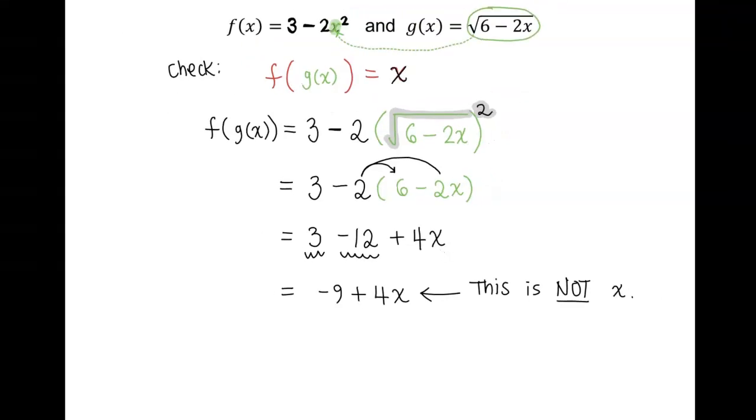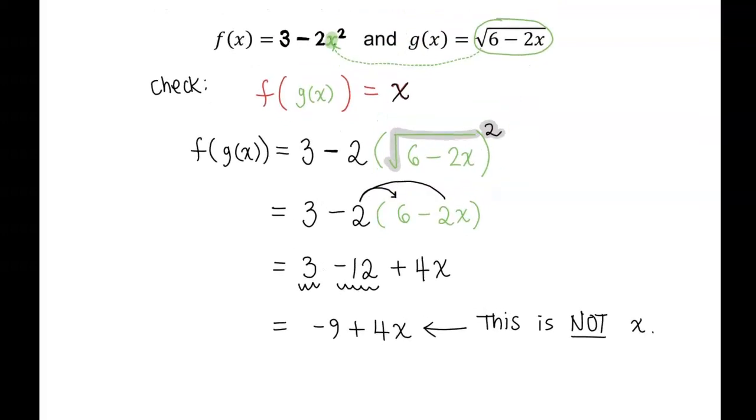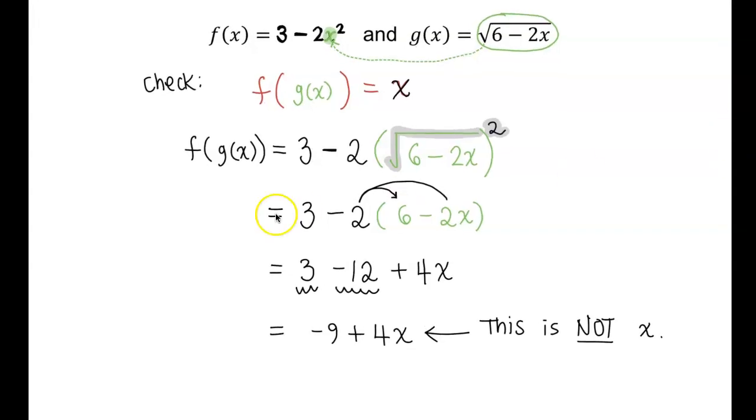So did it meet the first condition? Nope. Now we can stop there for this work. We don't have to go on and check the second condition because it didn't even meet the first half. So here's our conclusion: f and g are not inverses.